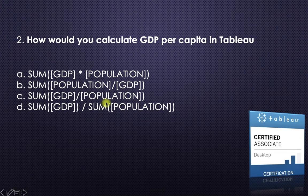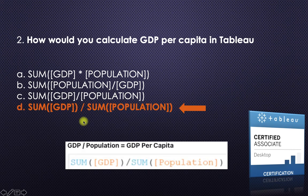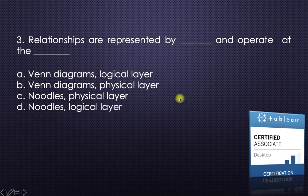The fourth option is correct: you sum up the GDP column values, then sum up the population column values, and divide. In Tableau the formula looks like SUM(GDP) divided by SUM(population), which is GDP per capita.